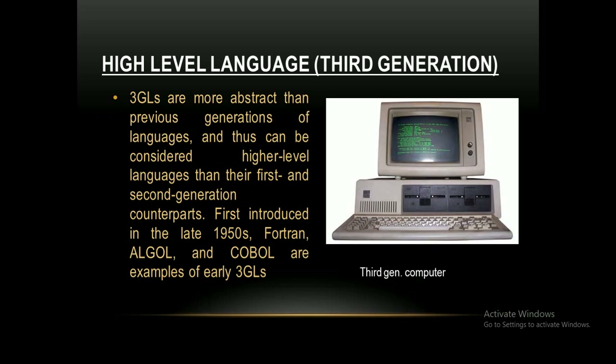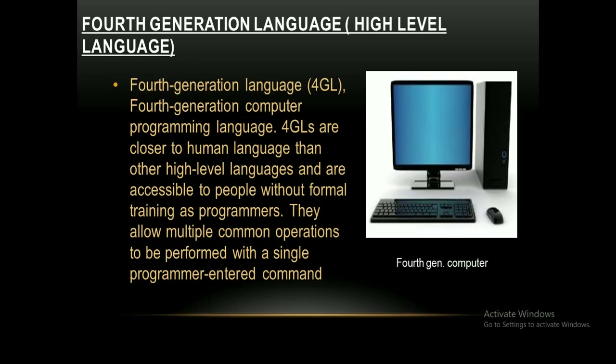Fourth-generation language, or 4GL, refers to fourth-generation computer programming languages. These languages are closer to human language than other high-level languages and are accessible to people without formal training as programmers. They allow multiple common operations to be performed with a single programmer-entered command.